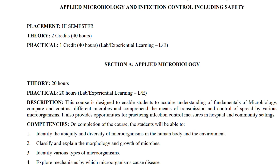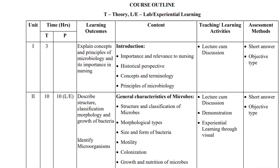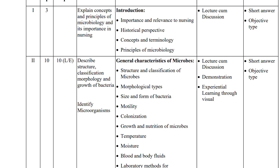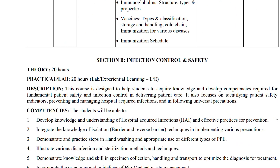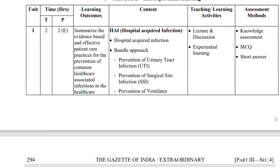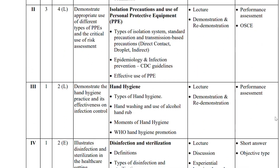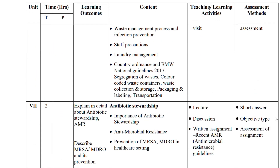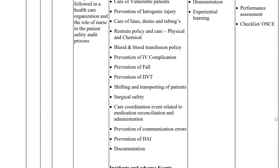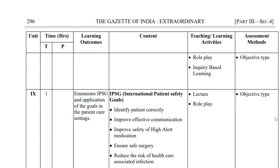For Applied Microbiology, the syllabus introduction covers general characteristics of microbes and pathogenic organisms and immunity. Part B covers Infection Control and Safety, including hospital-acquired infections, isolation precautions and use of PPE, hand hygiene, disinfection and sterilization, specimen collection, biomedical waste management, antibiotic stewardship, and patient safety indicators.